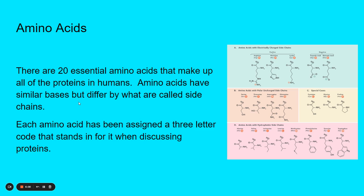Each amino acid has been assigned a three-letter code that stands in for when we discuss proteins. So instead of writing out asparagine a billion times, we can write it as ASN. They've even gone further and given each one a one-letter code, so you can make really simple drawings of proteins with just the letters — like R, H, N, C, F — and that could be a protein. We could all say that's arginine, histidine, asparagine, glycine, phenylalanine. So these amino acids are very important when talking about biochemistry and proteins.